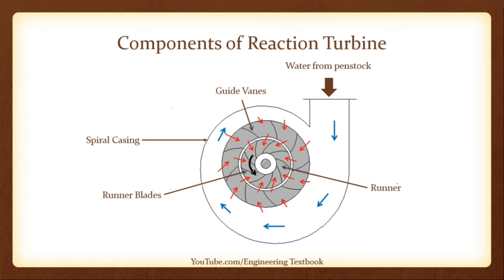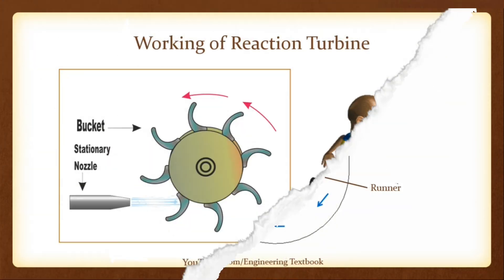Draft Tube. The draft tube connects the runner exit to the tailrace. Its cross-sectional area increases along its length, as the water coming out of the runner blades is at considerably low pressure. Its expanding cross-section area helps recover the pressure as water flows towards the tailrace.